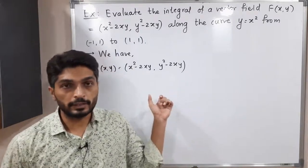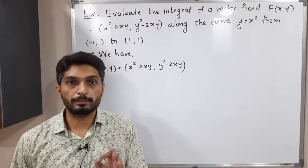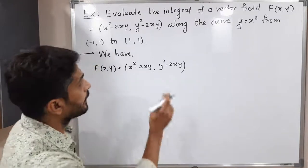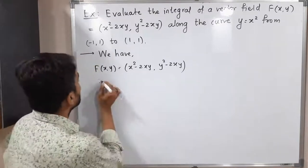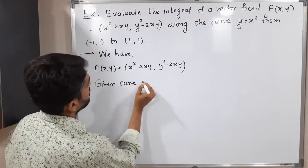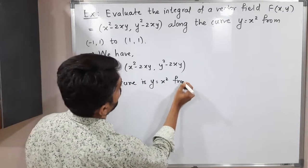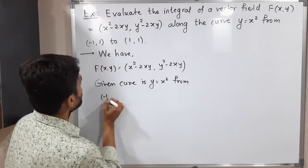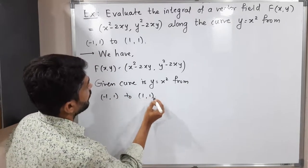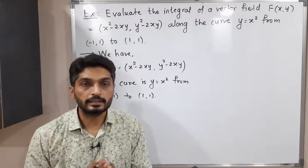The given vector field is f(x, y) = (x² − 2xy, y² − 2xy). The given curve is y = x², from the point (−1, 1) to (1, 1). So we have to consider that curve.